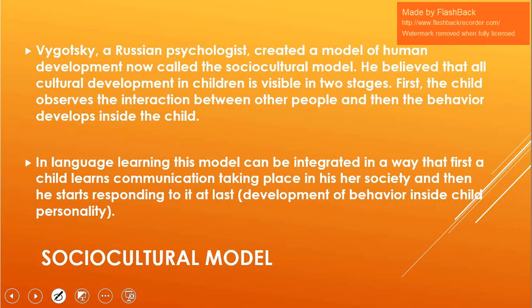Vygotsky believed that all cultural development in children is visible in two stages. First, the child observes the interaction between other people — like parents and adults in society — because the child knows nothing about language yet and simply observes. Then, in the second stage, behavior develops inside the child. We can relate this to language: language is also a behavior, so the child first observes interaction and then starts to develop that behavior.